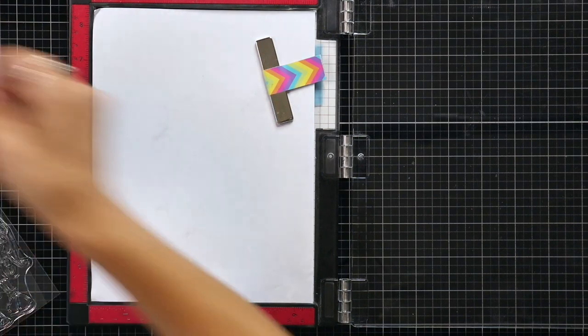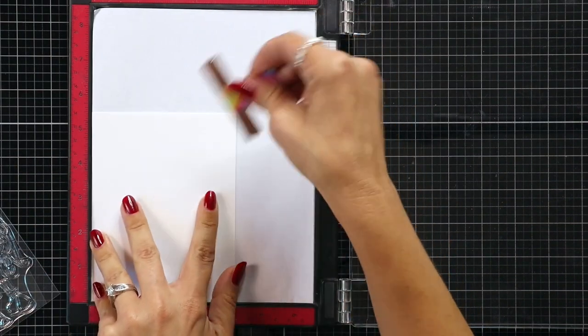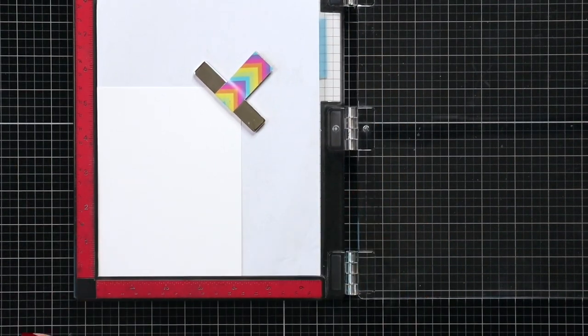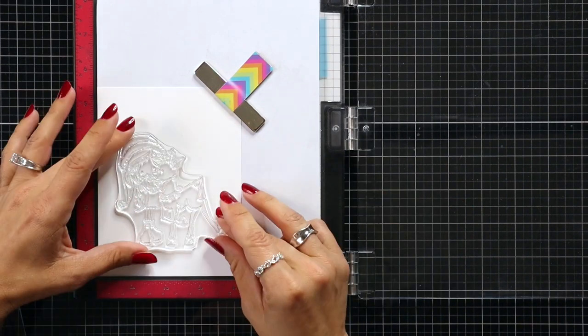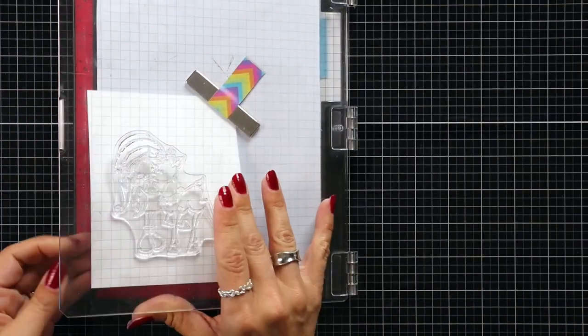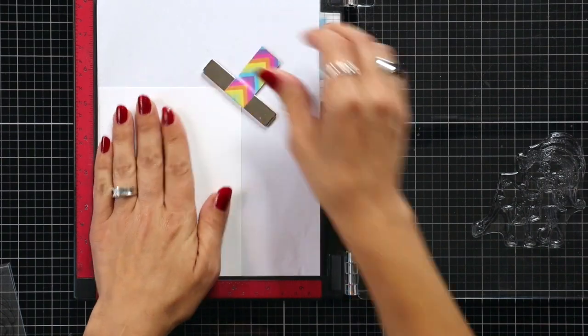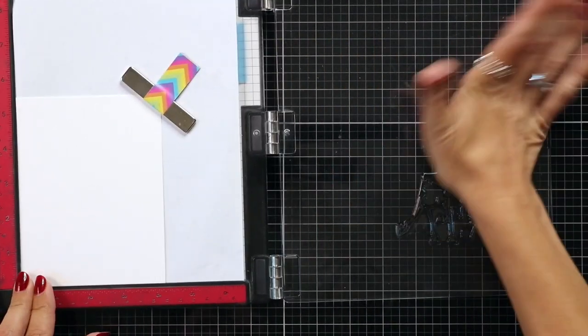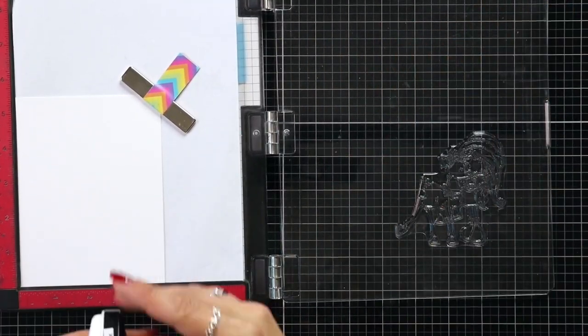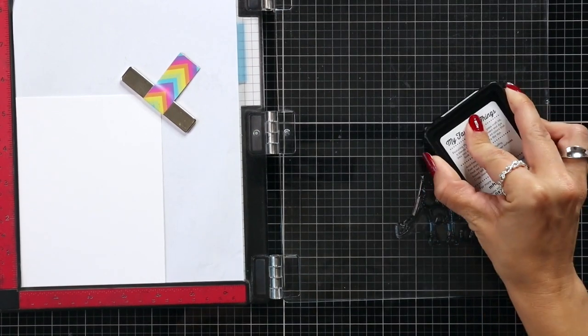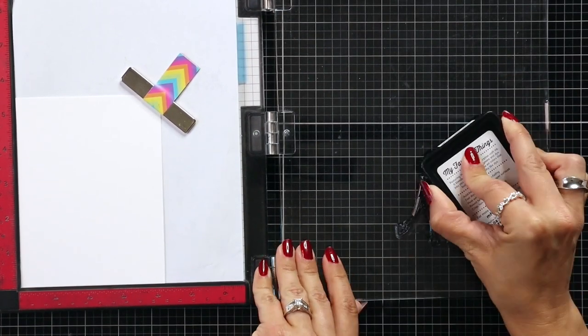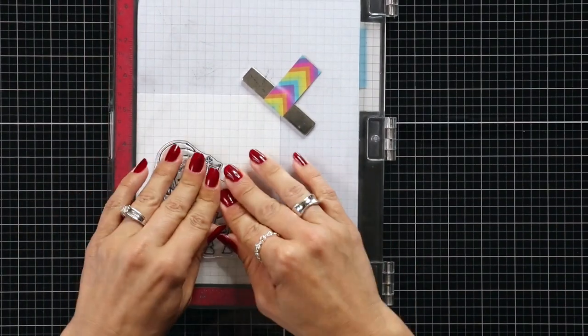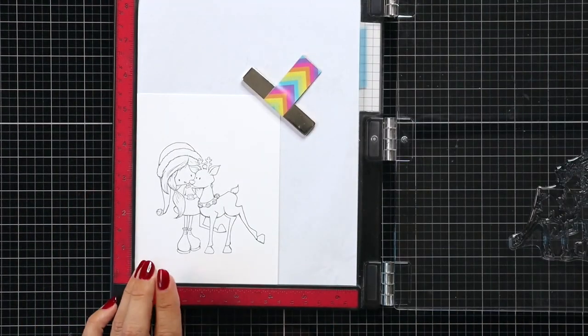The first thing I'm going to do is stamp out the image. This is from the stamp set Jingle Hugs, which has this really cute image of a little girl with a reindeer. I placed some white cardstock in my MISTI that is 80 pound and I'm going to stamp my image in the My Favorite Things Extreme Black Ink.